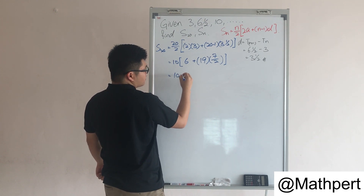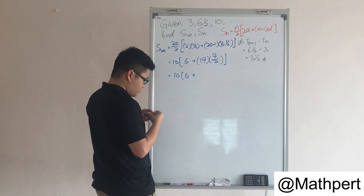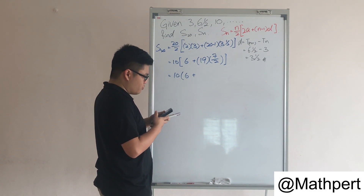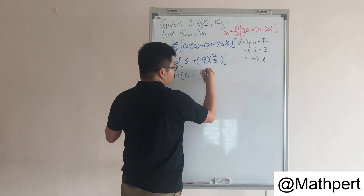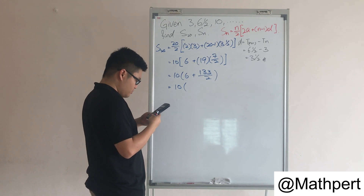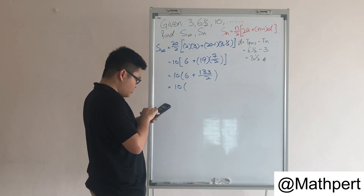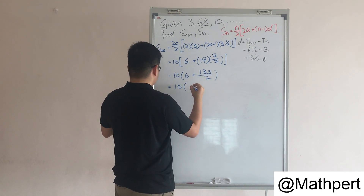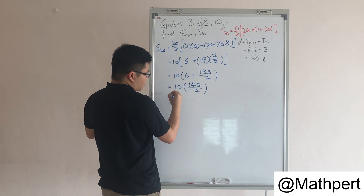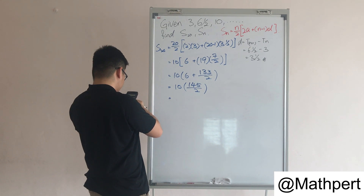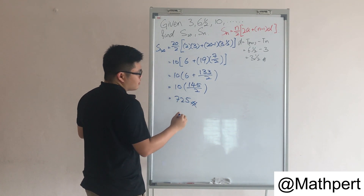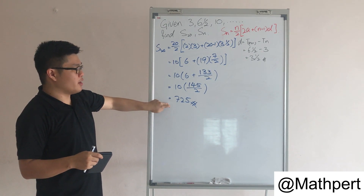So we have 10 multiplied by the bracket: 6 plus 133 over 2, which gives 145 over 2. Therefore 10 multiplied by 145 over 2 gives us 725. The summation of the first 20 terms is 725.